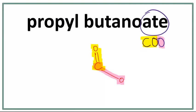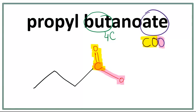Let's work on the parent chain. This 'but' here tells us that there are four carbons in the longest carbon chain — the parent chain. The trick to draw this is that you always count till one less than the number of carbons you want to draw. So we count one, two, three.